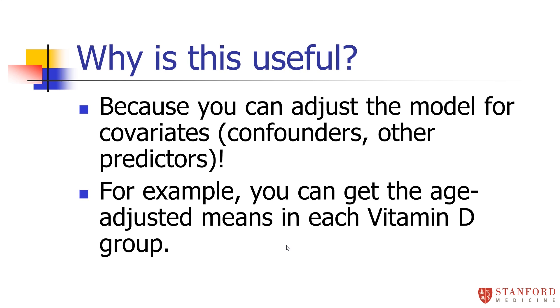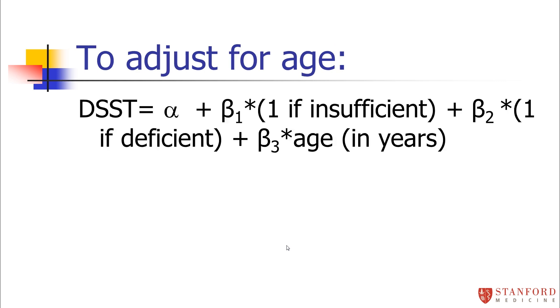For example, let's say I was to throw age into the model to try to get age adjusted means for each of those vitamin D groups. Age being a potential confounder here. So to adjust for age, I'm just going to throw age into the model. Nothing tricky.